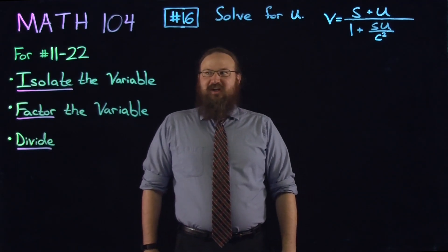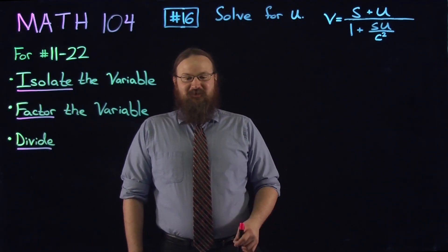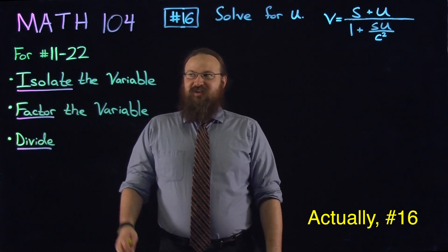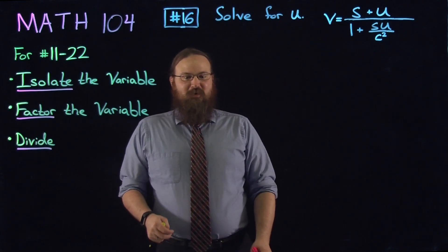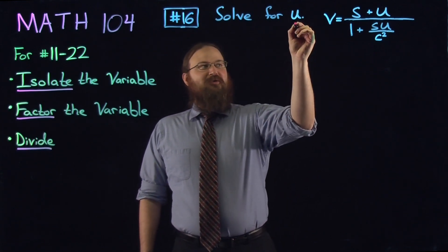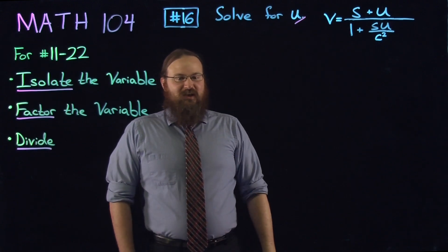Hello again. We're going to be continuing with the gateway questions for Math 104. This is number 15. Number 15 falls into the category of number 11 through 22, where we're solving for a variable. In this case, we're solving for u in a linear expression.